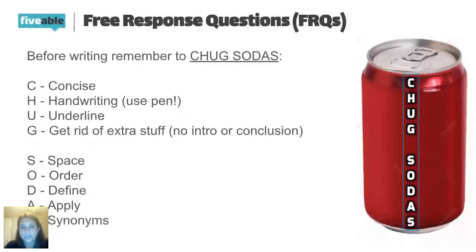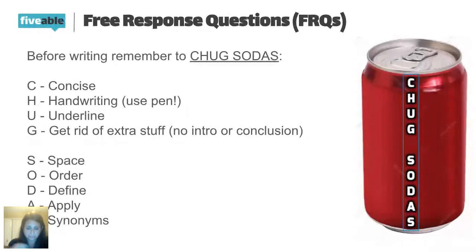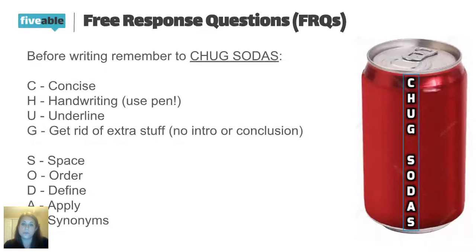Anna asks: will there be practice FRQs through Fiveable live reviews? Yes — I plan on every other session posting either multiple choice or FRQ questions and giving you a chance to write and respond. Today I do have a prompt, though I won't make you respond on our first day. Tanya asks: since there's no intro, will it be bullet style or one paragraph? Don't do bullet points — just leave a space between each term. Write a paragraph about nature, leave a space, then write your next paragraph about nurture.